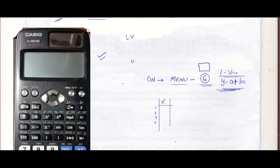Once you fill the data — there are 48 number of items here — fill all the data carefully and then press on. When you press on, the data table will disappear, but it will be in the memory and it will show statistics one variable.